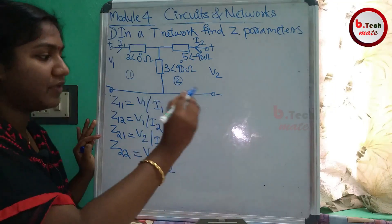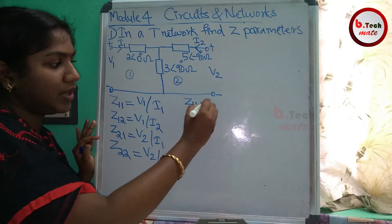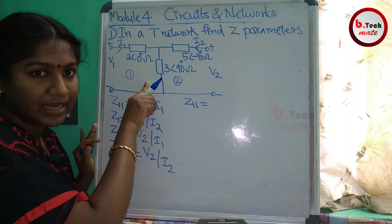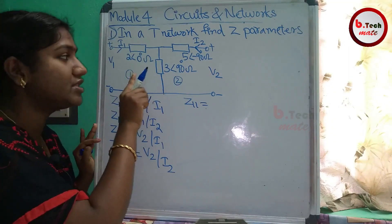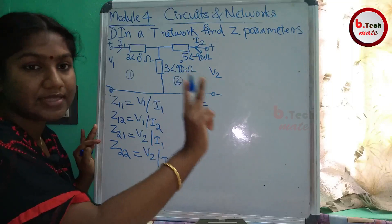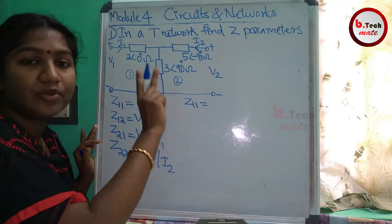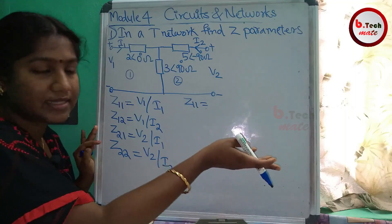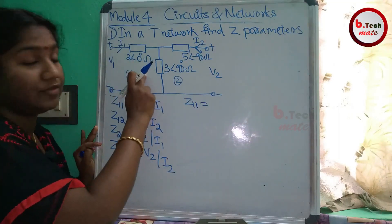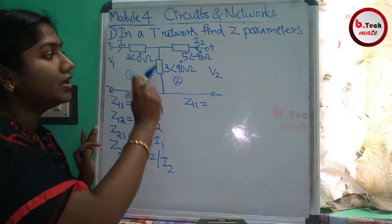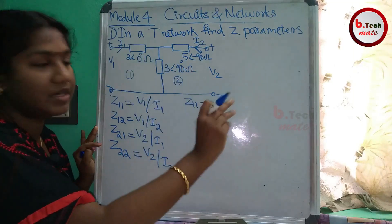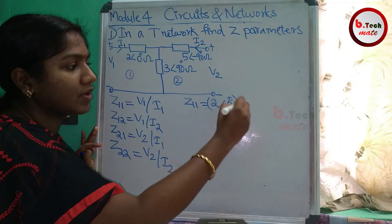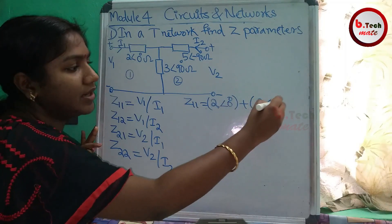This is the Z11 suffix. This is the first mesh. There are two impedances in the first mesh. Now the AC circuit has impedance just like DC circuits. The first mesh is the sum of the two impedances. This is 2 angle 0 plus 3 angle 90.